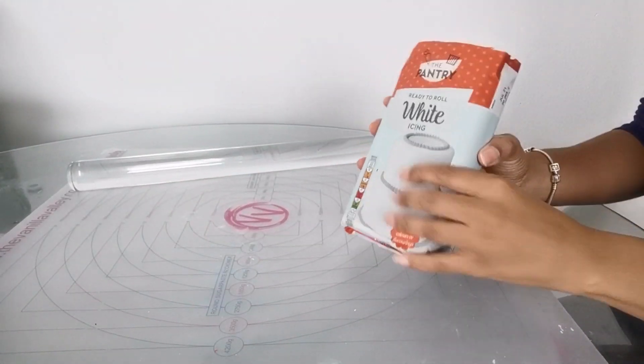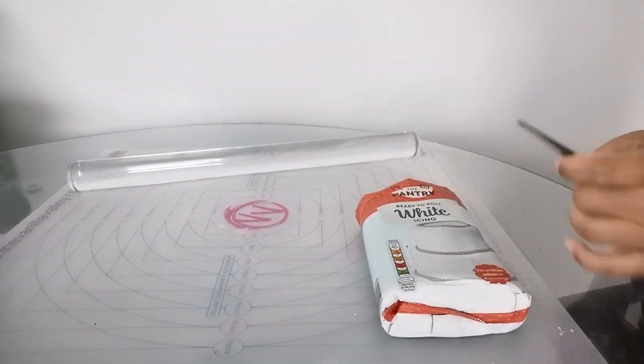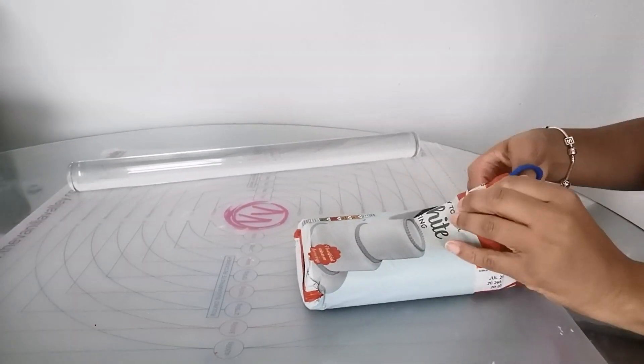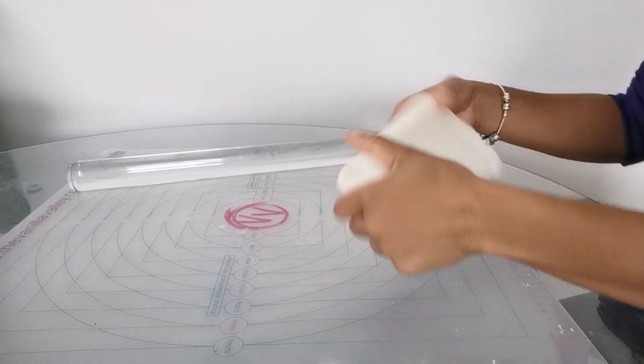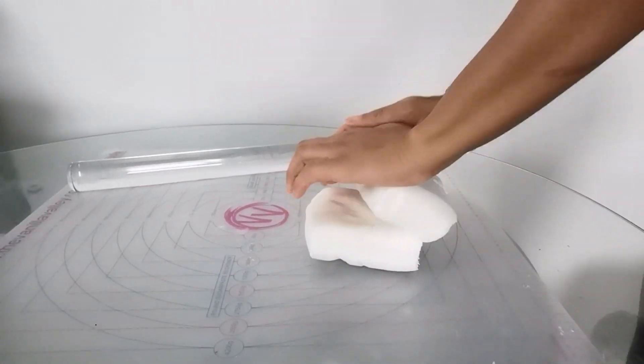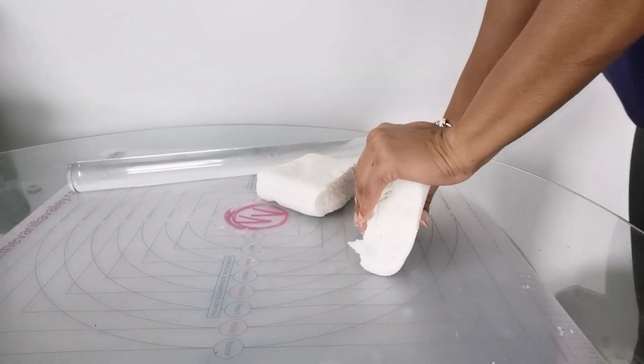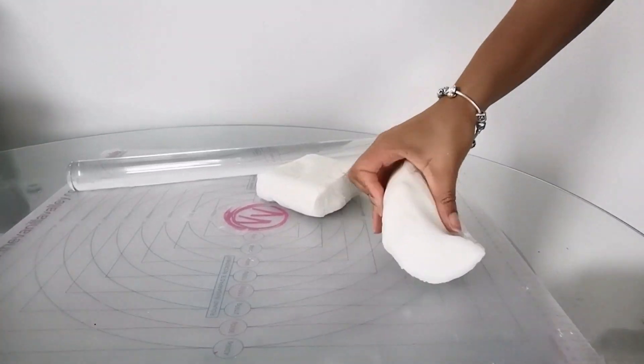Now we're getting to the part where we actually decorate the board. I've got some white sugar paste from Aldi, a cheap version. I don't use expensive things when decorating the board because you don't need to, you just need something cheap and easy to use.